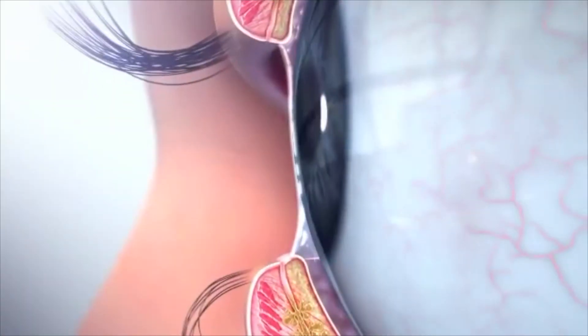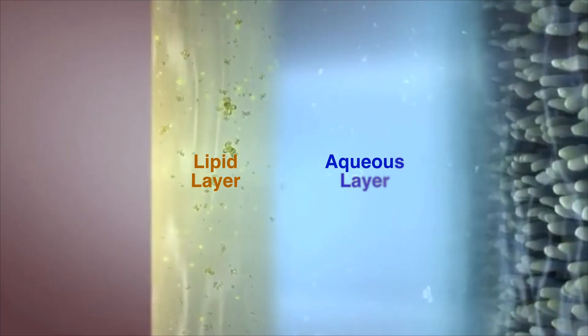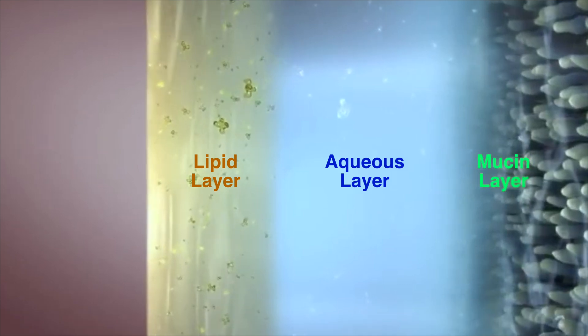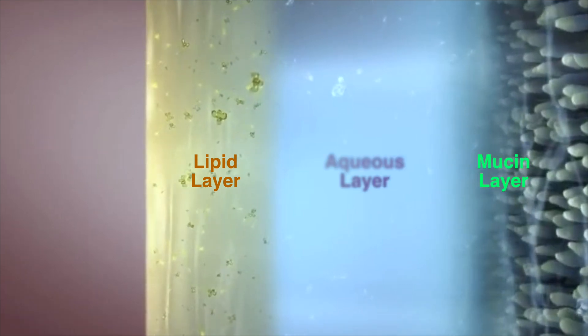To understand this eye condition and how it causes dry eyes, let's go over what composes a normal tear. Tears are actually quite complex, composed of three different layers secreted by different glands and tissues: the oily outermost lipid layer, the water-like middle aqueous layer, and finally the innermost mucin layer.